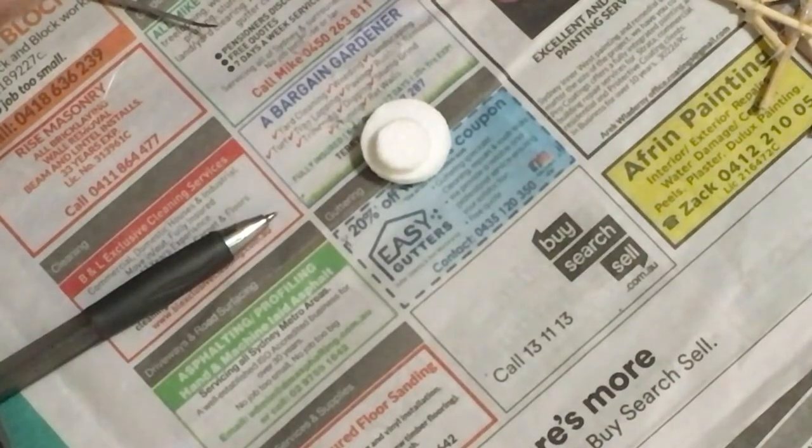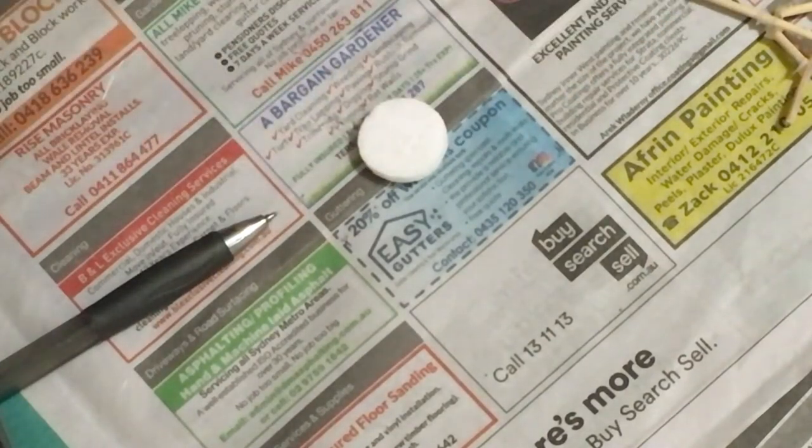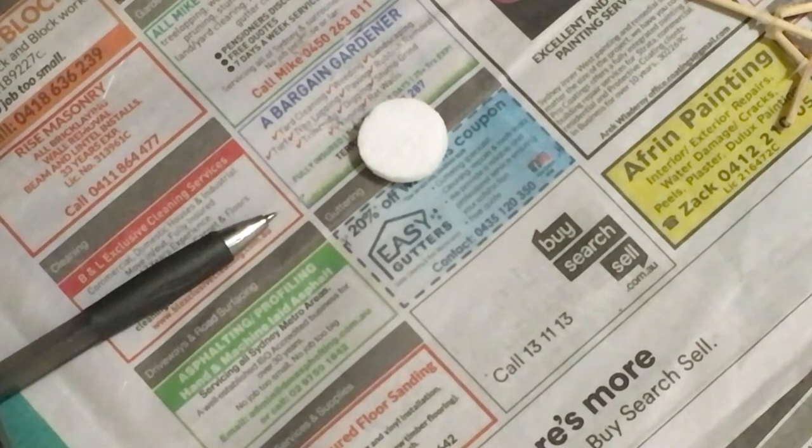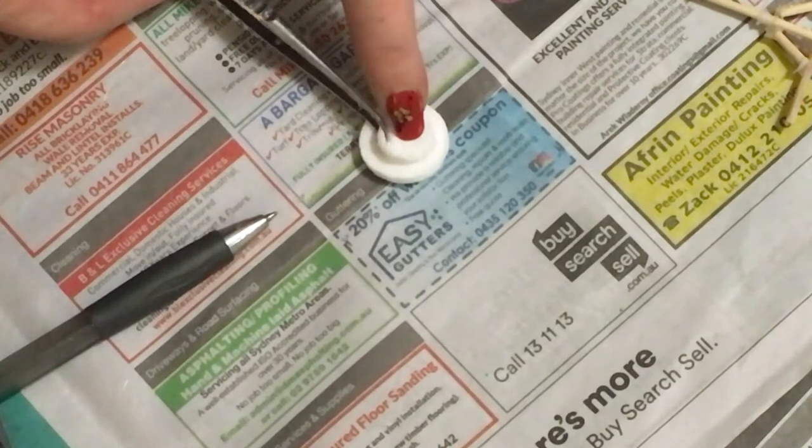Now we're going to glue the little pieces together. Using tweezers, try and put the glue just on the outside because you're going to poke the stick through the center once you put it in place.